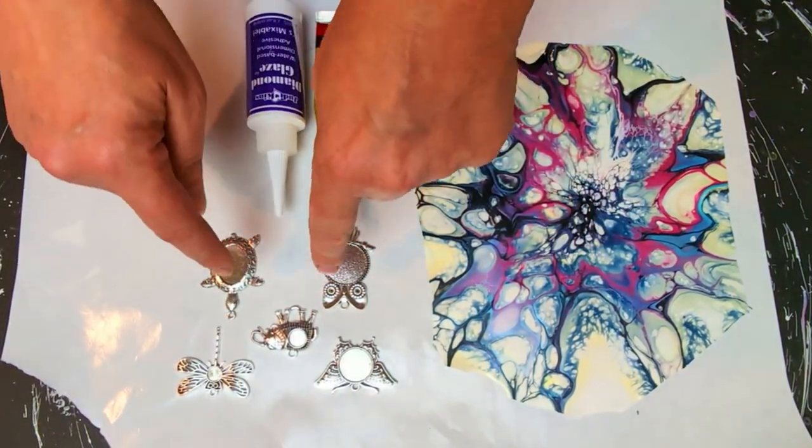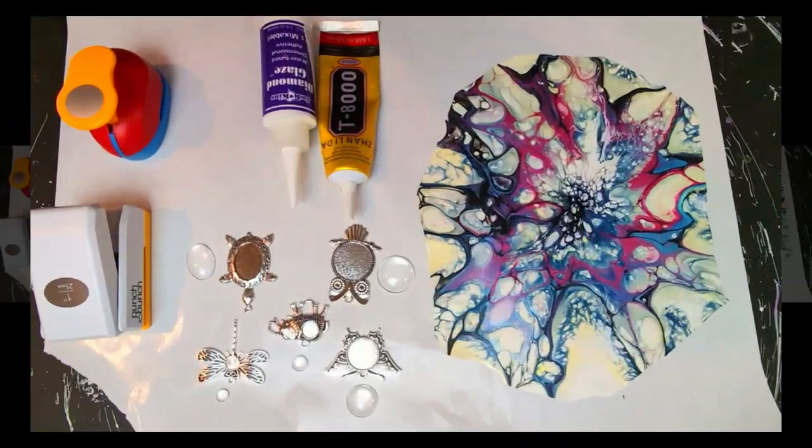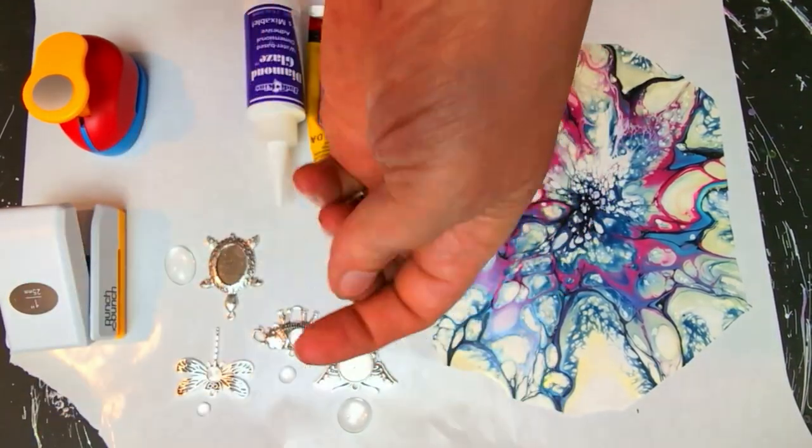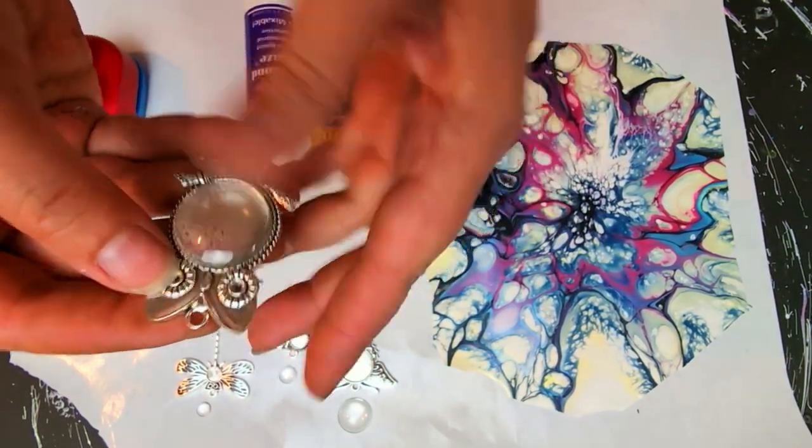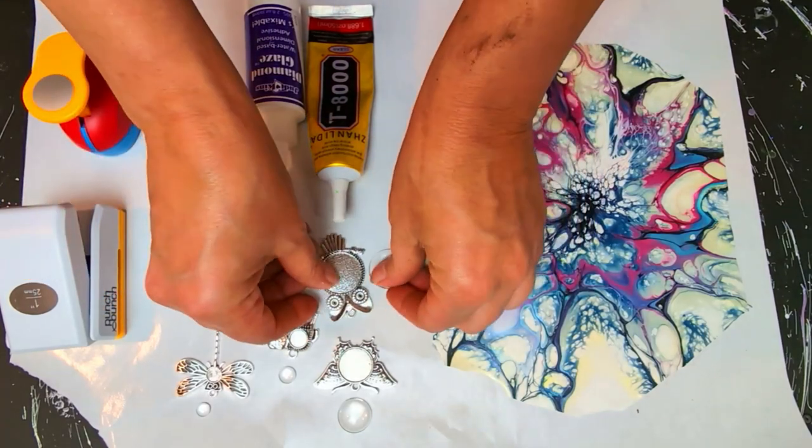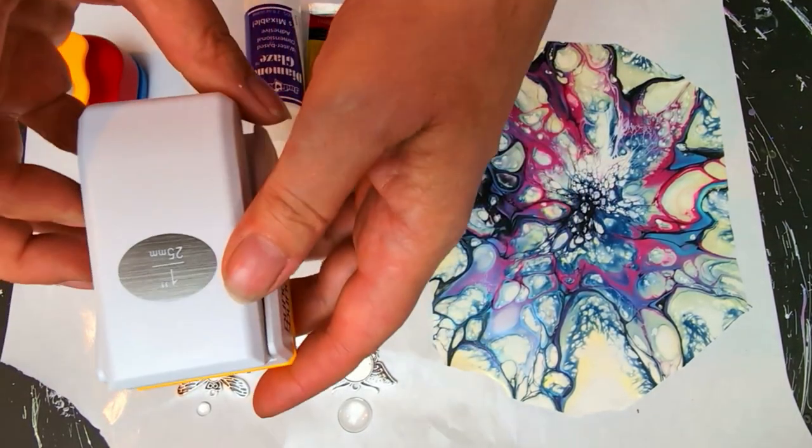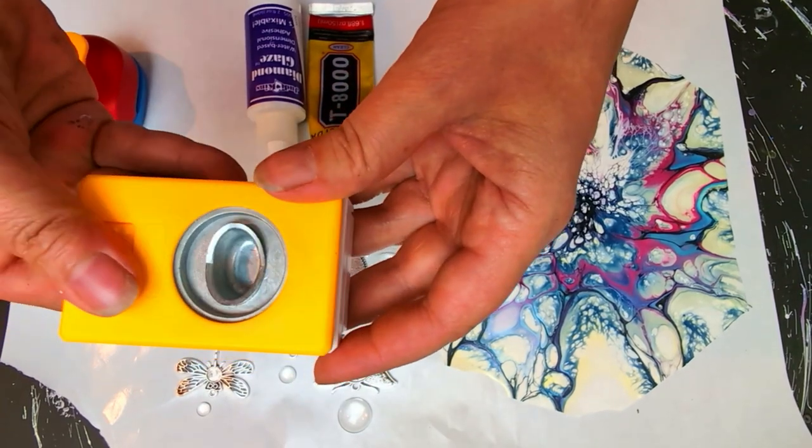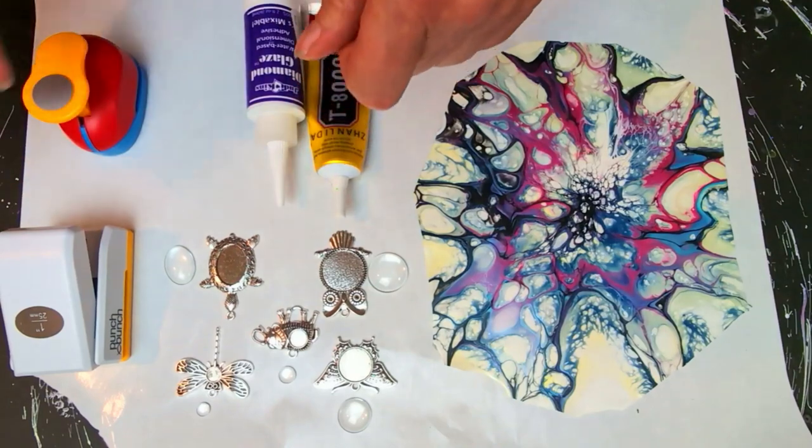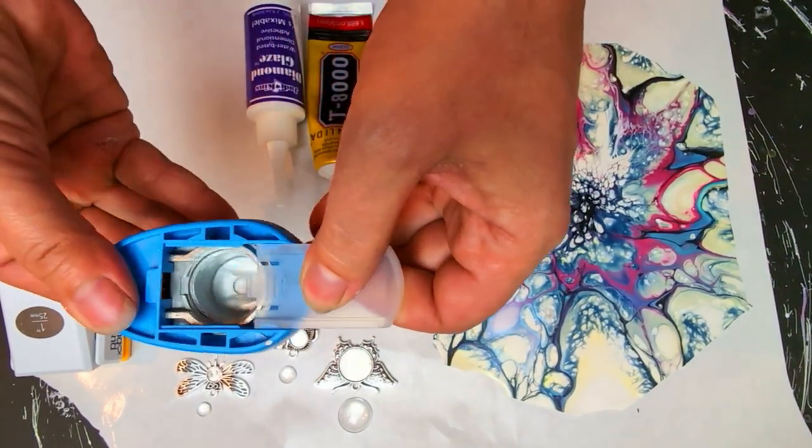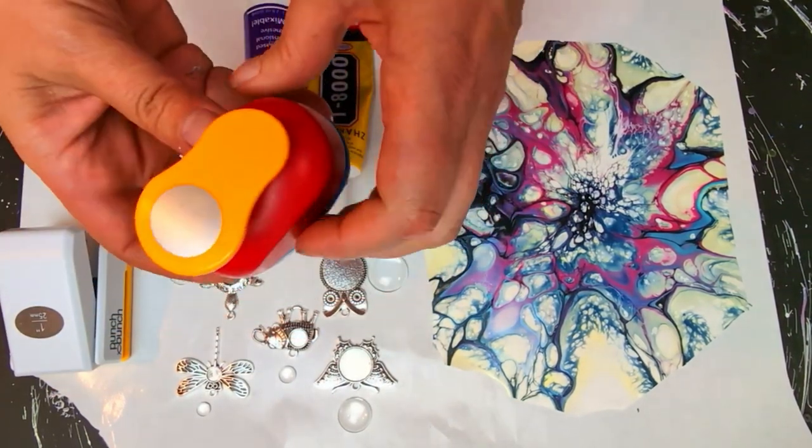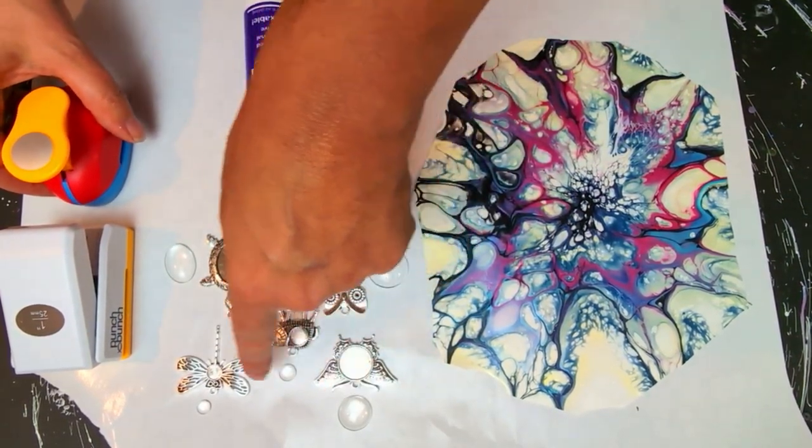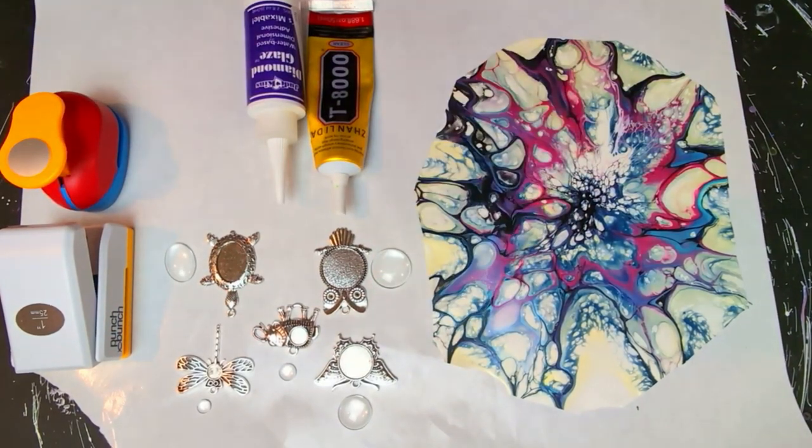And you will also need your cabochons. This is a cabochon. It is a glass cover, and it is used for being placed inside after you put your paint skins in. I also have a one-inch or 25-millimeter oval-shaped punch and a round punch. This is for this size, and I have not been able to find these yet, but I will show you how to do that part.